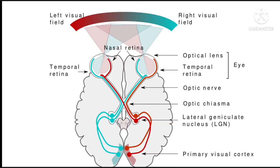Yahan se phir optic nerve ke dwara brain se connected hoti hai humari eyeballs. Optic nerve posterior side mein optic disc ya blind spot se nikalti hai — hum sab yeh jaante hai ki blind spot mein photoreceptors nahi hote. Dono eyeballs se aane wali optic nerves kuch converge ho jaati hai, aur optic chiasma ke level par in optic nerves ke nasal fibers jo hain, jo inner side ke fibers hain, woh decussate ho jaate hai, yani cross karti hai.